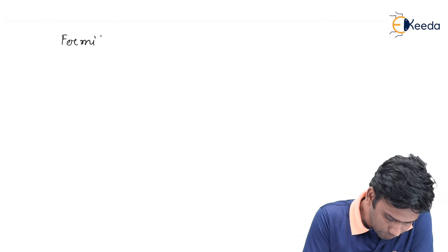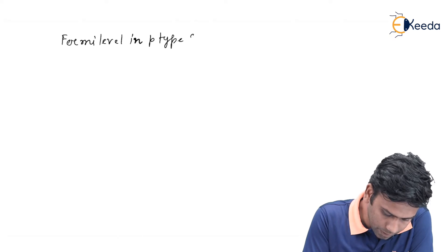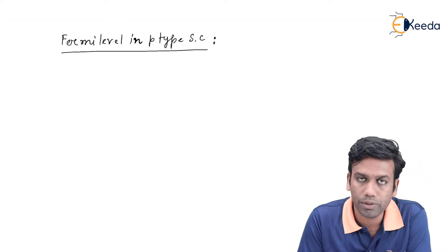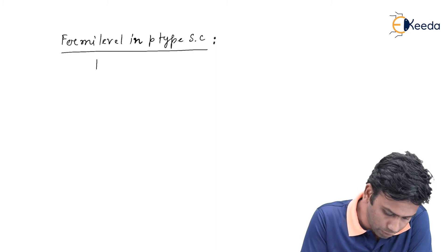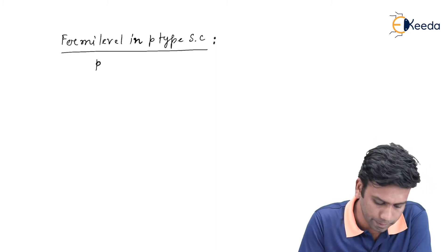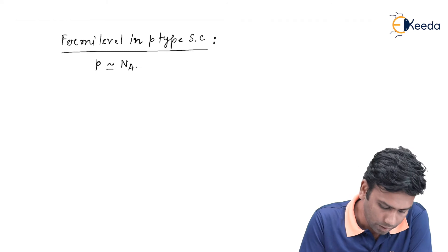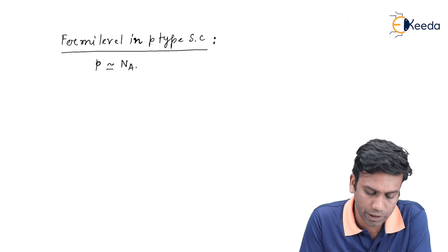Fermi level in p-type semiconductor. We know that in a p-type, the majority carriers are the holes and the hole concentration is given by small p, which equals Na. And Na is the acceptor concentration inside the p-type material.